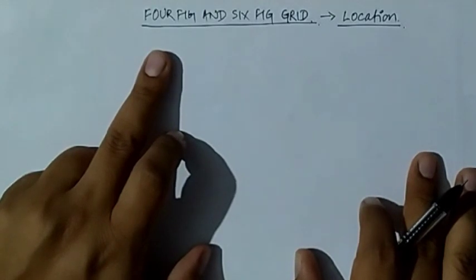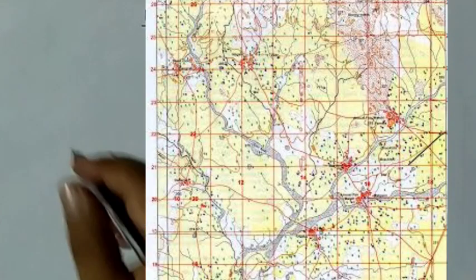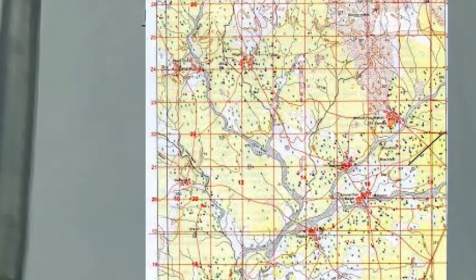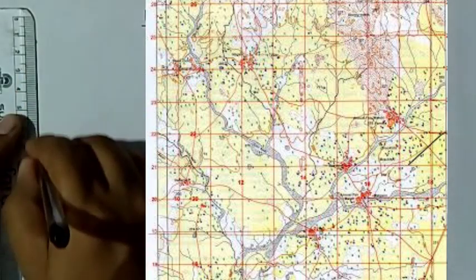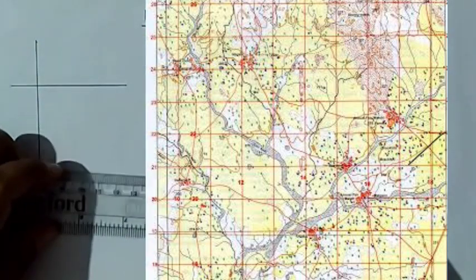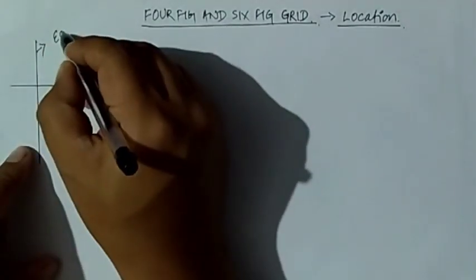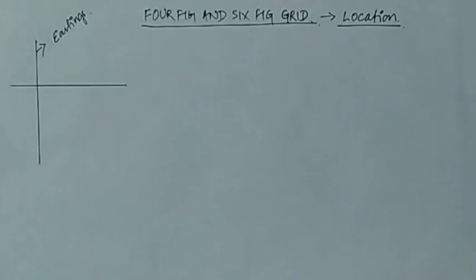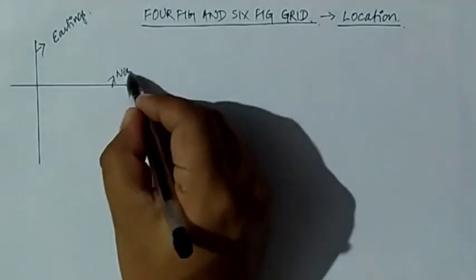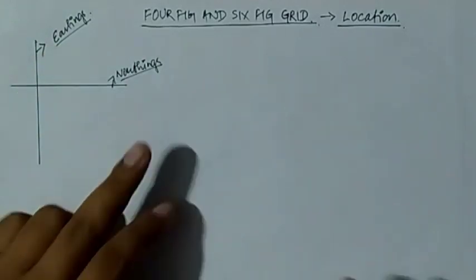In the topographical map, two different lines are used. One is the vertical line — these are red in color — and one is the horizontal lines. The vertical lines are termed as eastings, and the horizontal lines are termed as northings.